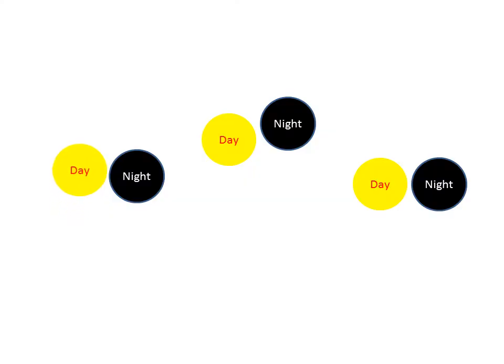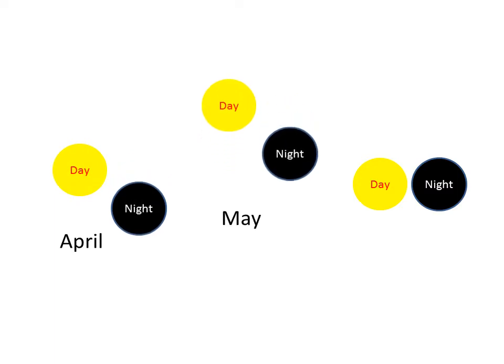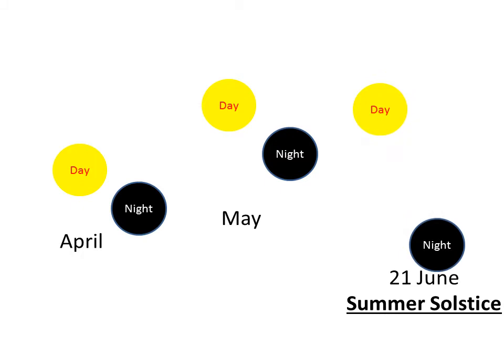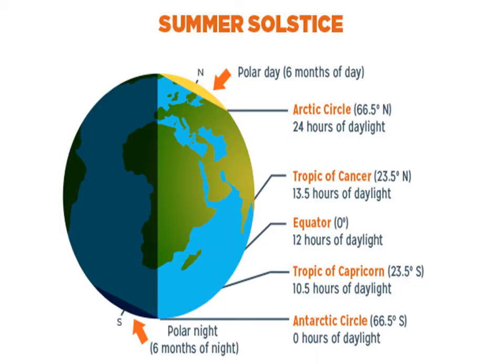By the time we reach 21st June, day will be maximum and night will be minimum. So 21st June is called summer solstice. Solstice means 'sol' meaning sun at its maximum or minimum position. For better clarity, look at this diagram. The northern hemisphere is tilted towards the sun on 21st June. As the rays of the sun fall directly on the Tropic of Cancer, these areas receive more heat, while the areas towards the pole receive less heat due to the slanting rays of the sun.